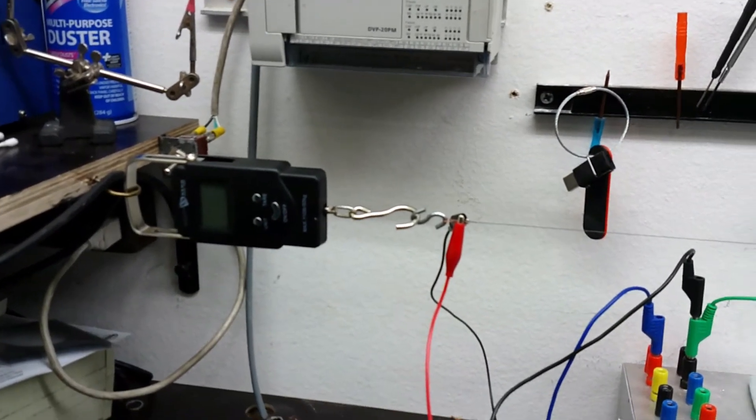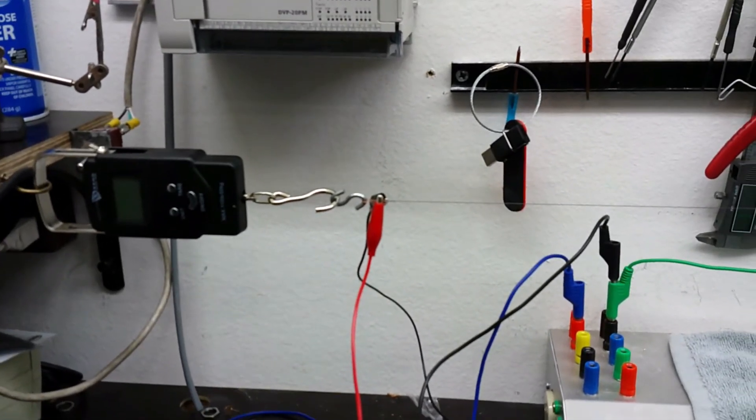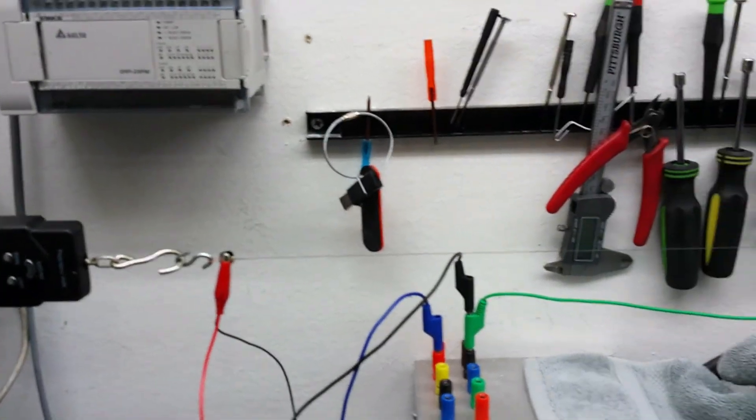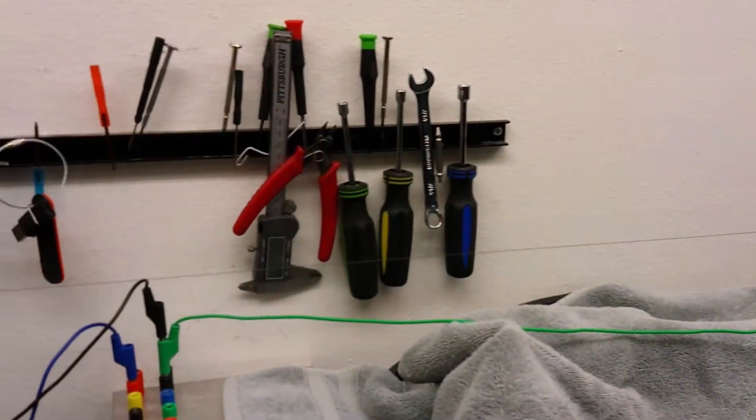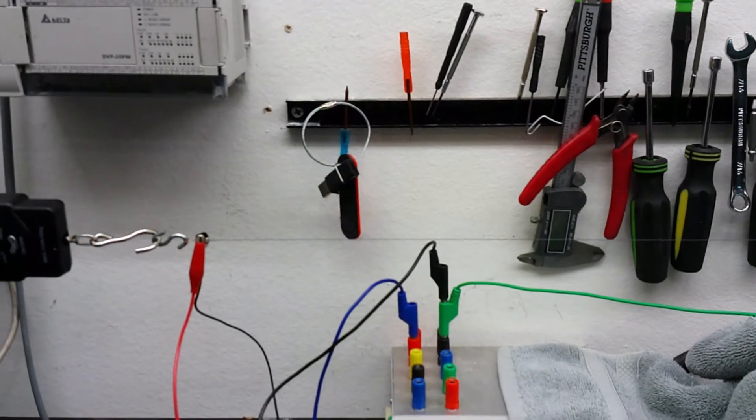So let me turn on this hot wire. You can see our voltage goes up to about 66 volts. If you can see, the wire is slightly, slightly red.